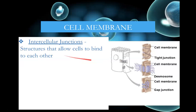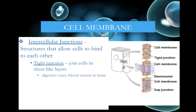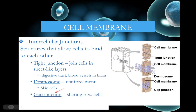There are intercellular junctions that connect one cell to another — three main types. Tight junctions join cells together in sheets, like in our digestive tract and blood vessels. Desmosomes are used for reinforcement with protein fibers that really bind two cells together, especially evident in the skin. Gap junctions allow sharing between cells, forming a tunnel from one cell to the other — we see that in heart muscle, where communication is important so cells contract at the same time.